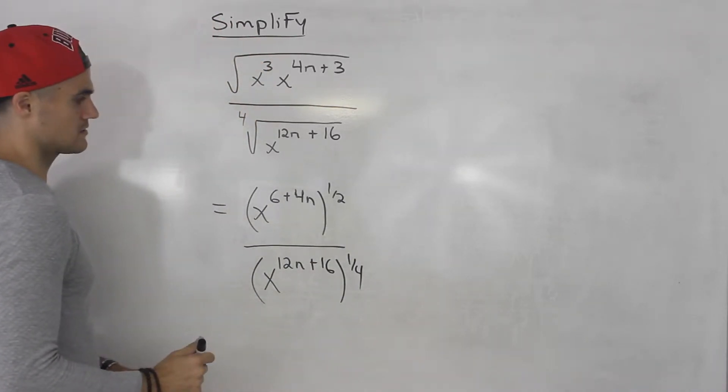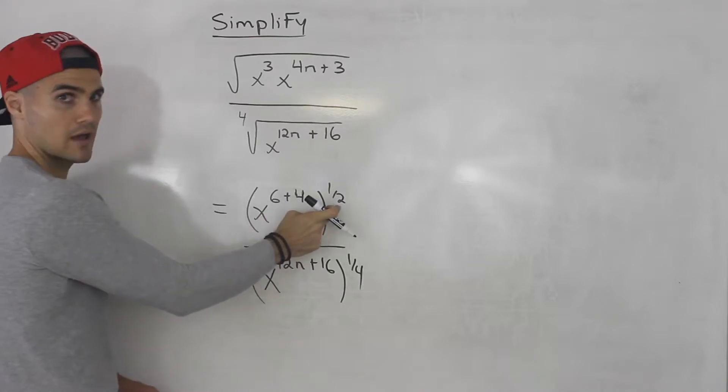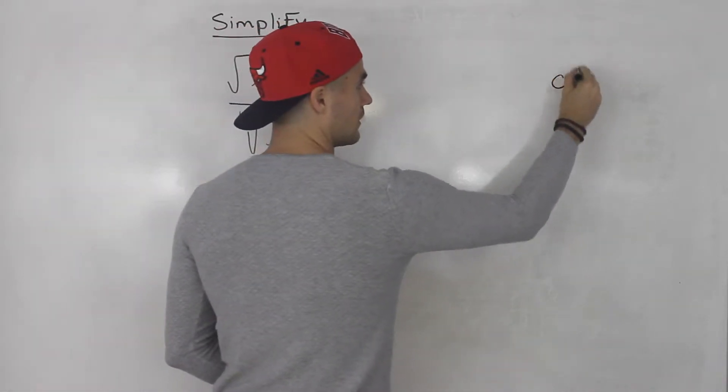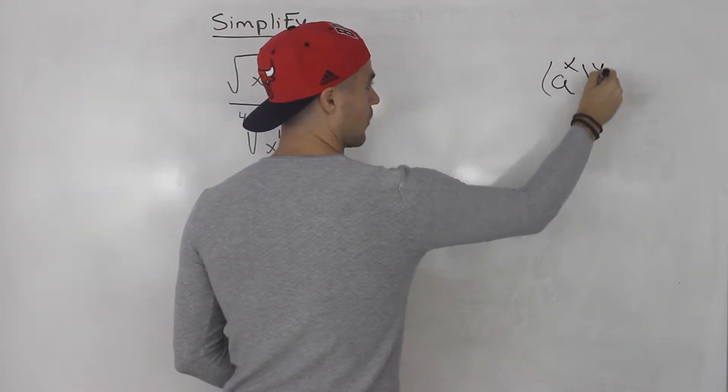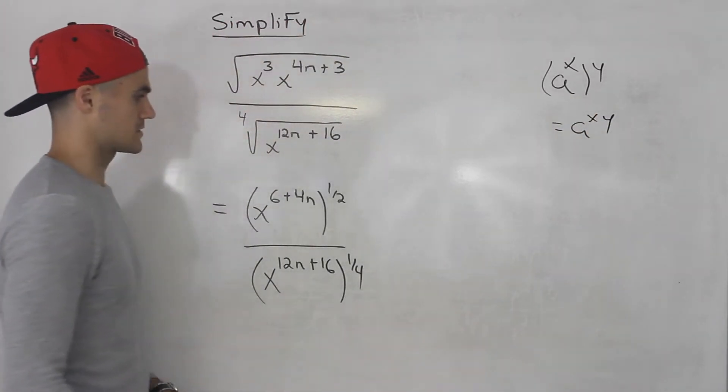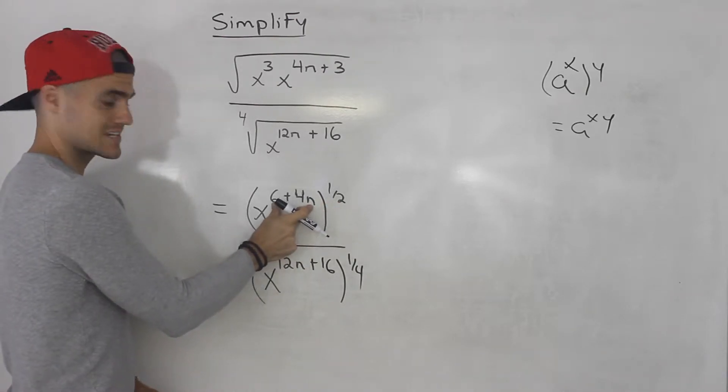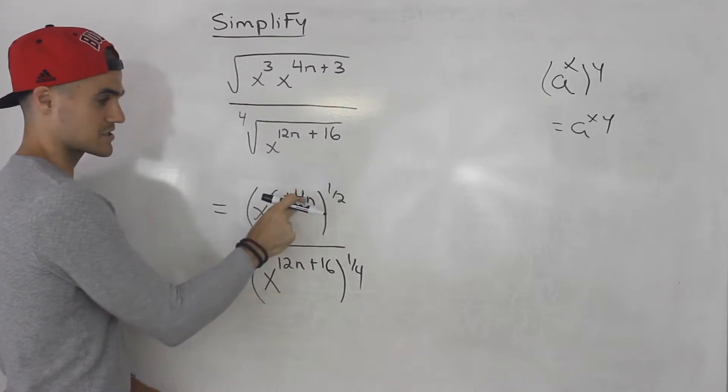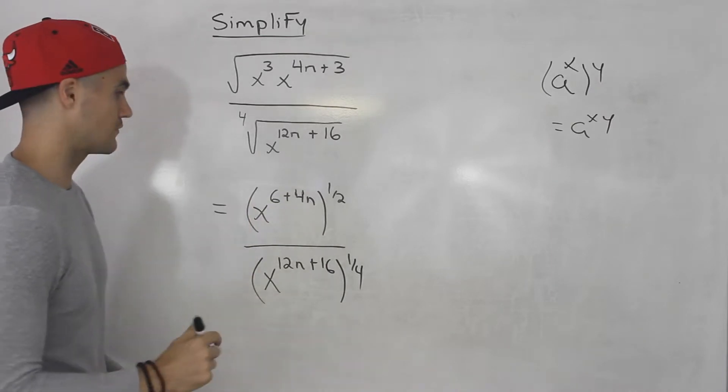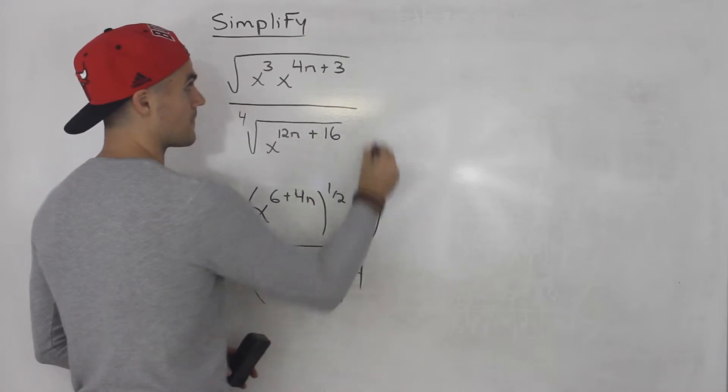And then from here what I can do is I can take these two exponents and multiply them. If you remember the rule a to the power of x to the power of y, you just multiply those exponents. But when we take this 1 over 2 and multiply it by this exponent, we got to multiply it by that entire exponent. So we're gonna have to distribute that 1 half throughout that whole term, that whole expression.